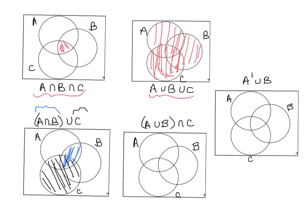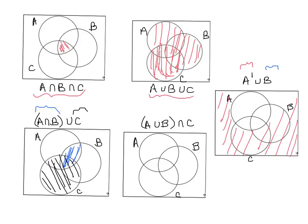Now let's do the one on the right side of the page: A complement union B. Since it's union, we do everything in A complement as well as everything in B. First we shade A complement, then as well as everything in B. It's the union, so it's everything in both sets — everything in A complement as well as everything in B.